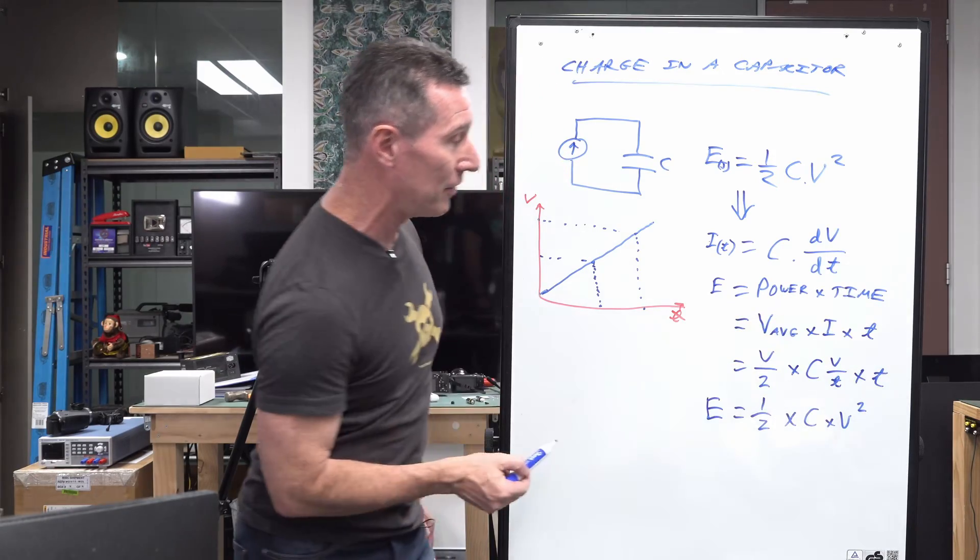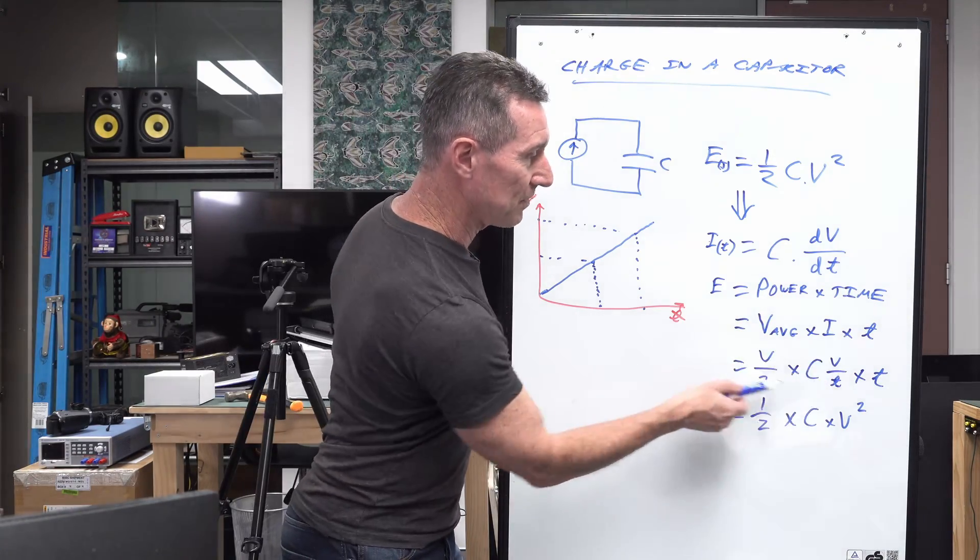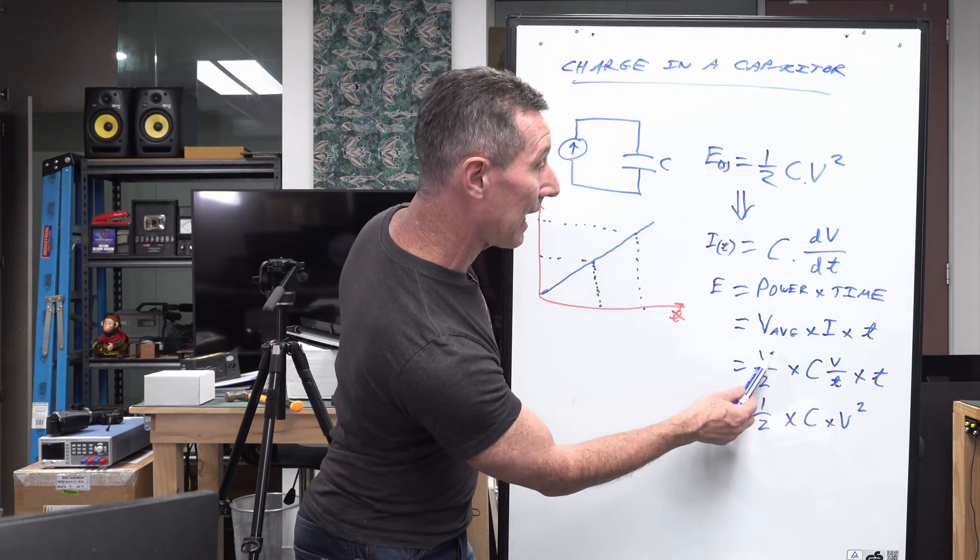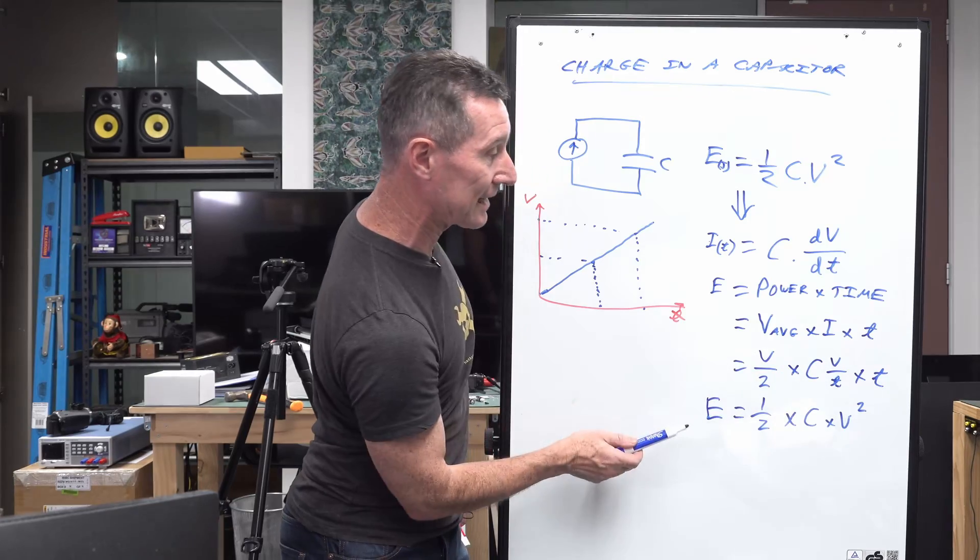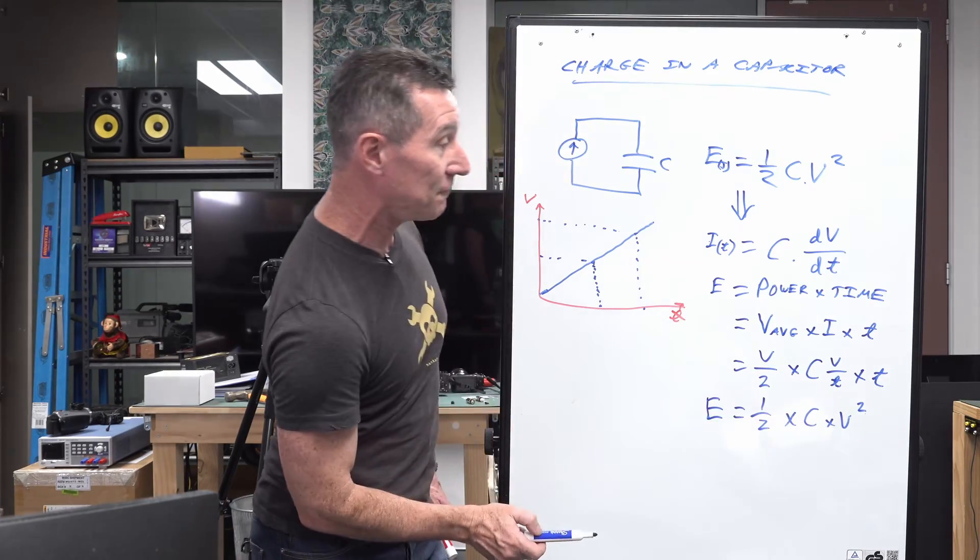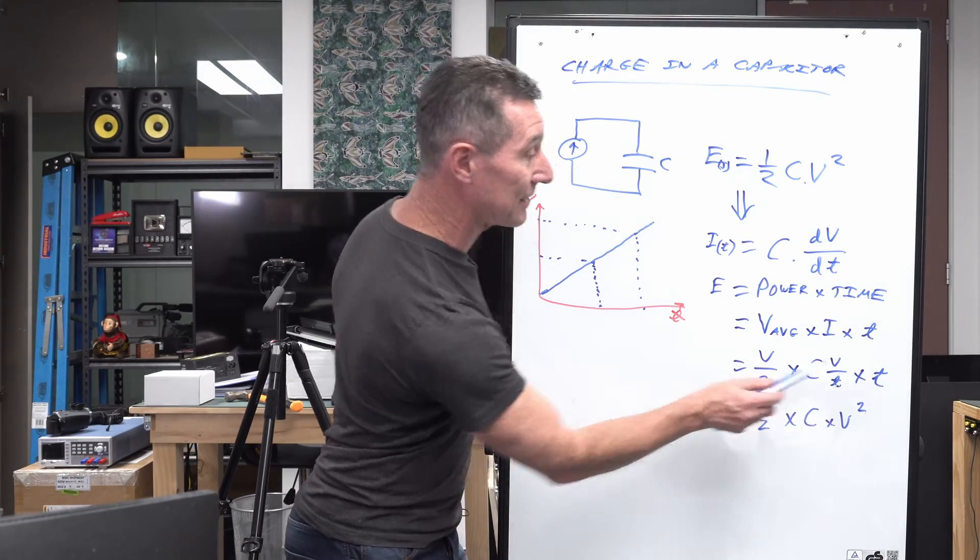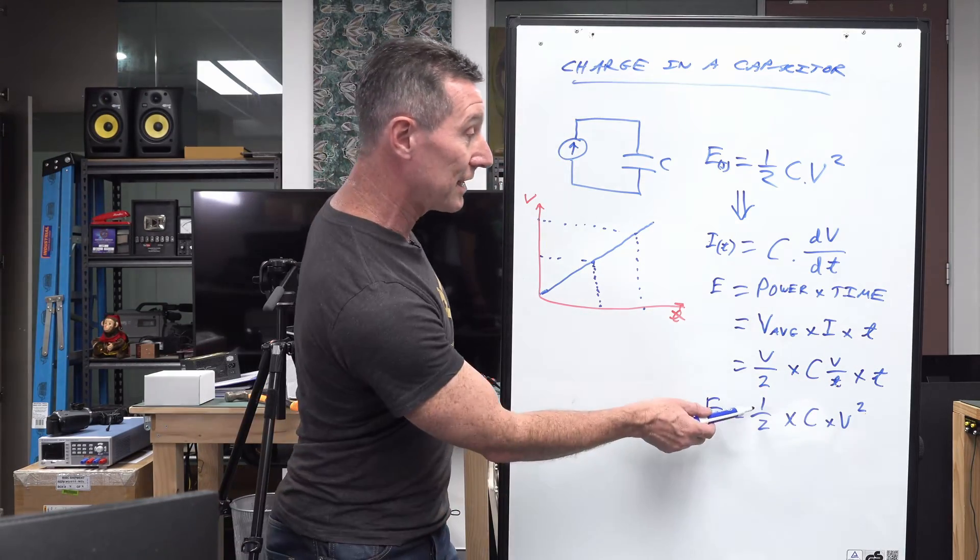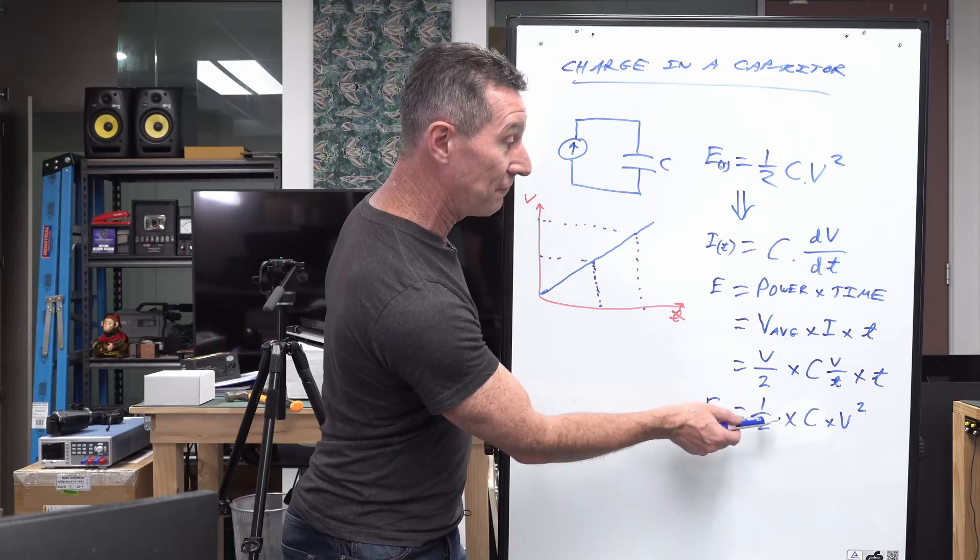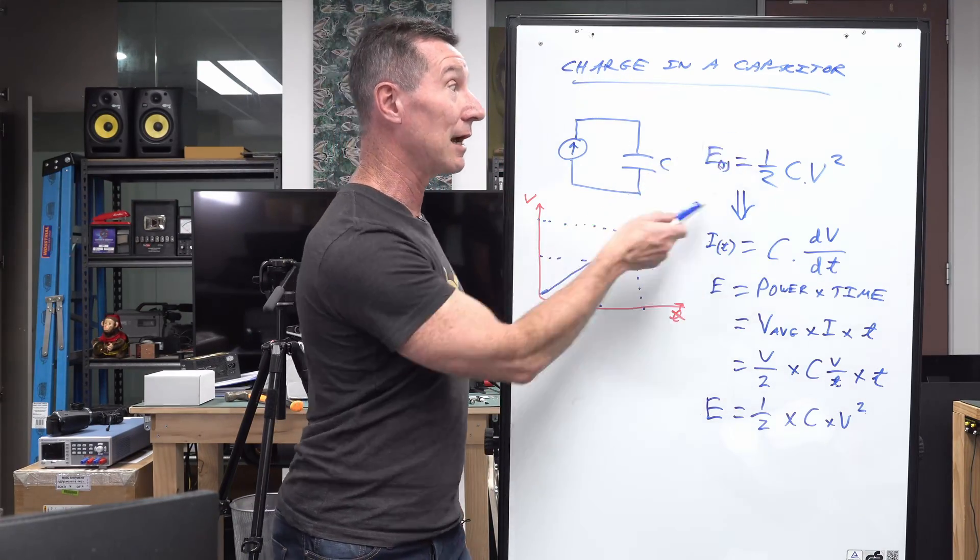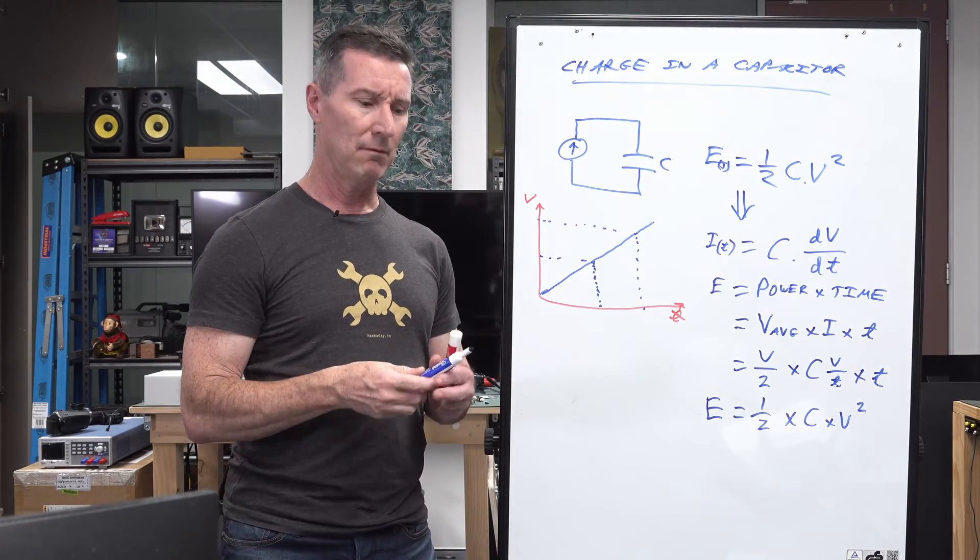And then if you just rearrange this here, the V's double here. You can't cancel out a V, so that's where you get your V squared. Your C just remains like this, and your T's cancel out like this. So you're left with half times C times V squared. Energy equals half C V squared. Clear as mud?